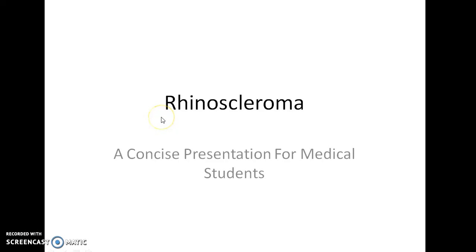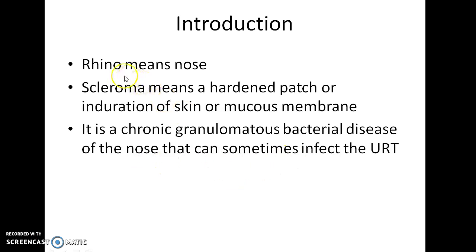Hello, this is Indian Medico. In this video we are going to see about Rhino Scleroma — a concise presentation for medical students. Rhino means nose and scleroma means a hardened patch or induration of skin or mucous membrane. Rhino Scleroma is therefore a chronic granulomatous bacterial disease of the nose that can sometimes infect the upper respiratory tract.